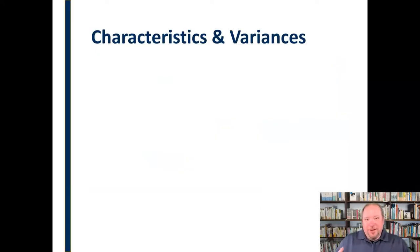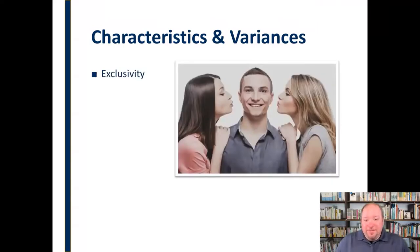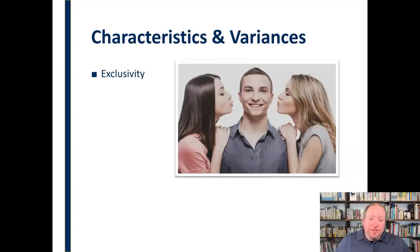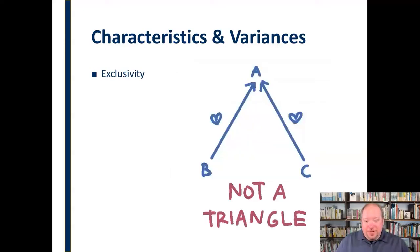Let's start with looking at some of the different characteristics and variances that we see in romantic relationships. The first is exclusivity. All relationships will vary in the manner of exclusivity — sometimes you're in an exclusive relationship, sometimes you're not. Exclusivity means that you are seeing one other person; it's you and one other person involved in that relationship.